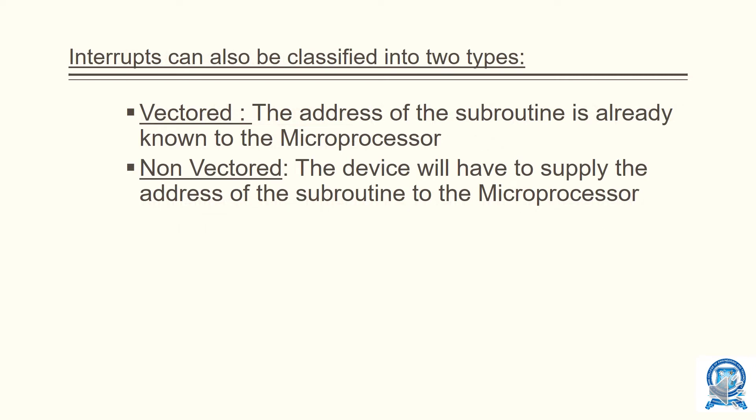Interrupts can also be classified into vectored and non-vectored. Vectored means the address of the subroutine is already known by the processor. Non-vectored means the processor does not know the address in advance.